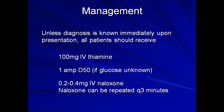Unless the diagnosis is known immediately upon presentation, all patients should receive 100 mg of intravenous thiamine, 1 amp of D50 if the glucose cannot be readily assessed via glucometer, and 0.2 to 0.4 mg of IV naloxone, which is the reversal agent for opiate toxicity. It's important to keep in mind that naloxone can also improve coma even in the absence of opiate toxicity, so I wouldn't use it too strongly as a diagnostic tool, but rather as presumptive treatment.